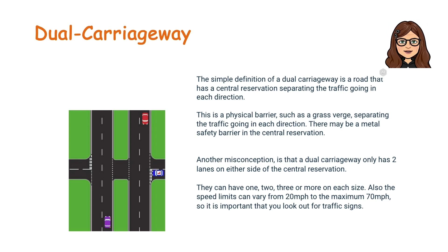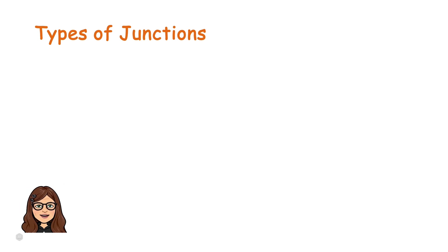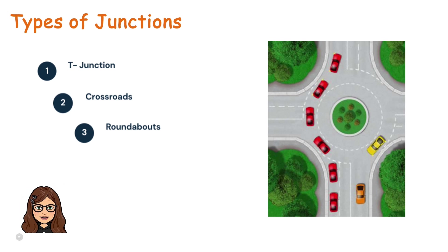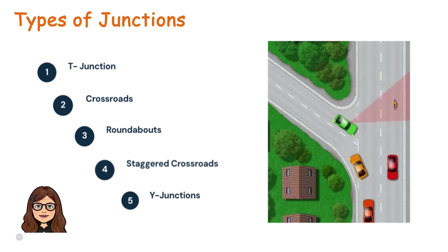Speed limits can vary from 20 miles per hour to the maximum 70 miles per hour, so it is important that you look out for traffic signs. The most common junction types you will encounter are T-junctions, crossroads, roundabouts, staggered crossroads and Y-junctions. Each junction has its own set of rules and recognizing them correctly is crucial for safe driving.